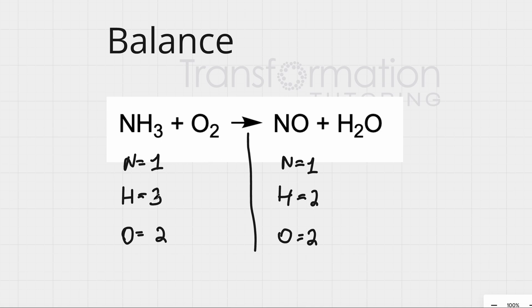We will balance by adding coefficients, numbers in front of our molecules. So for hydrogen, we have 3, but we want them to be equal. How can we make 3 and 2 equal? We can multiply 3 by 2 and 2 by 3 to make it equal. So I'm going to put 2 here and I'm going to put 3 here. And let's see how all the numbers will change.